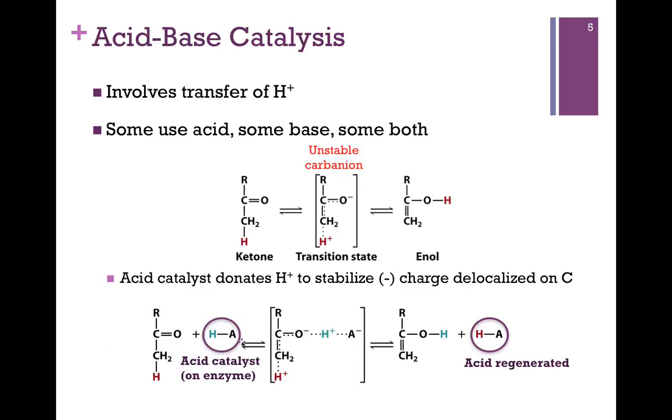Let's look first at acid-base catalysis. It simply involves the transfer of a proton. Some enzymes use acid catalysis, some use base catalysis, and some a combination of the two. Here we have a chemical reaction where we're converting a ketone to an enol. Here's our transition state molecule outlined by the brackets here, and it involves an unstable carbanion, and so we want to see how we can use catalysis to stabilize this intermediate.